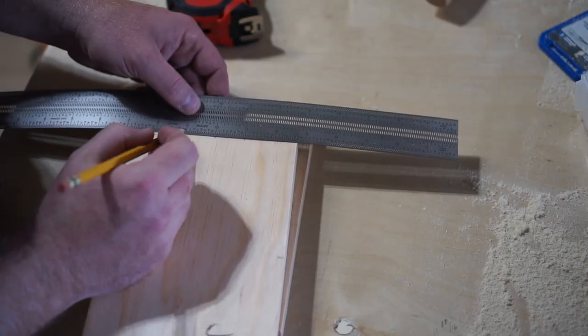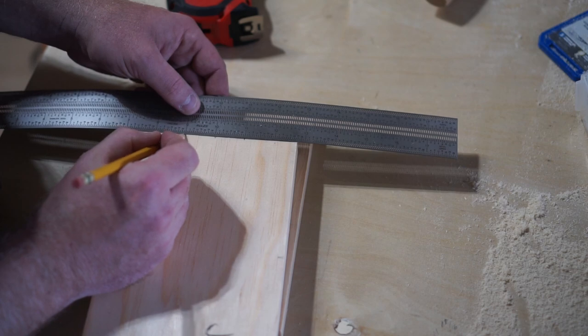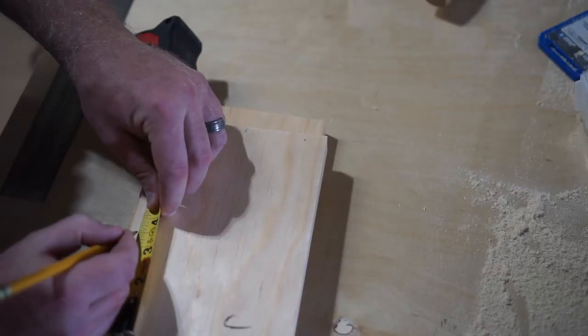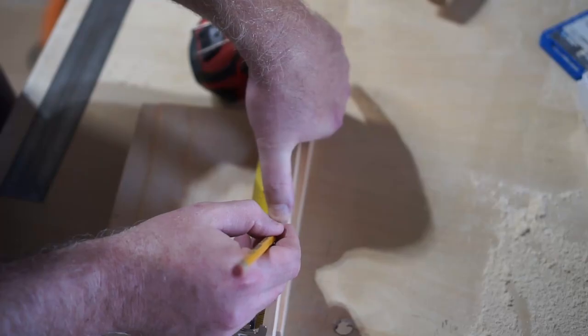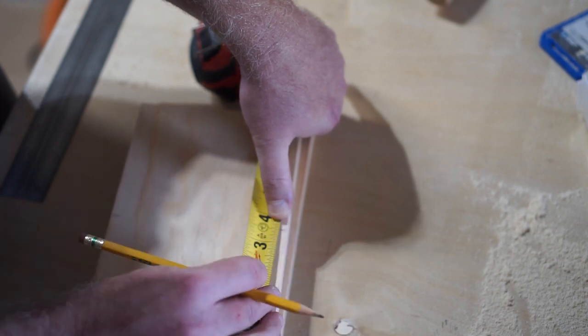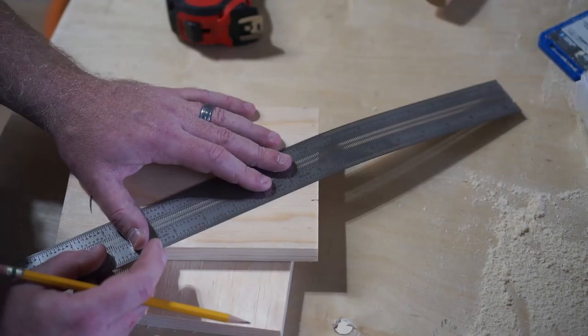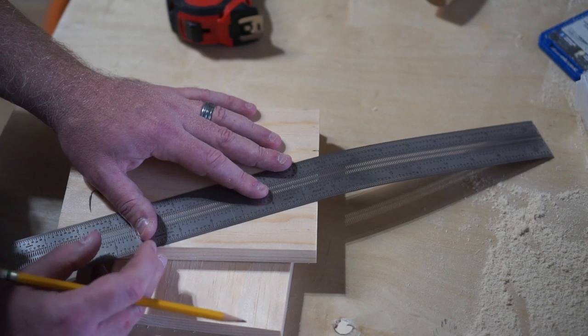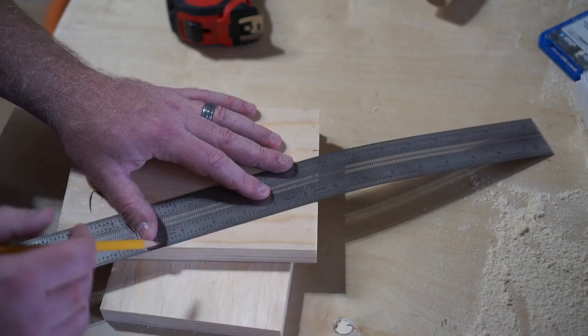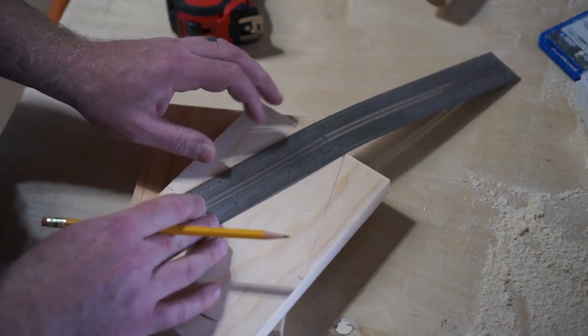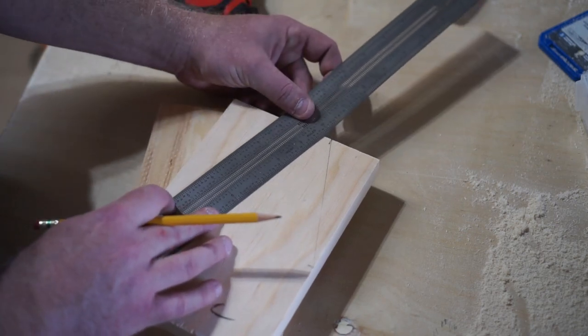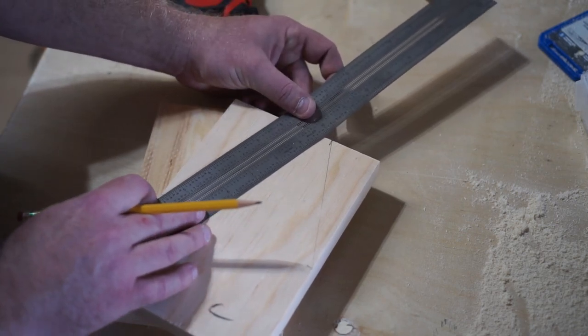Next we're going to lay out the tapers that we'll add to the two end pieces that hold the handle. I marked a 2-inch flat portion at the top right above the handle, and then that tapered down 4 and a half inches to meet the rest of the side. You can really lay this out however you like. This is just an example of what I thought looked good.